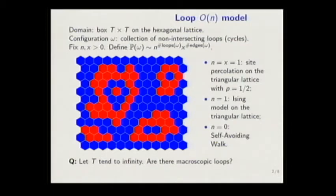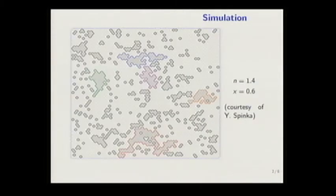And the question is, let's say we take first the box of t times t, and then we'll let t go to infinity, so the box becomes bigger and bigger. The question is whether we will see macroscopic loops, whether we will see something in the limit, in a sense, or it will be just very sparse, small loops. So, the answer - we will see the microscopic loops for n between one and two at the critical level, at the critical point x, which I will discuss, which we'll define later.